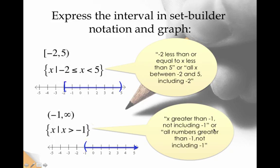We want to express the interval in set-builder notation and graph. So what do I have here? We have a bracket on the negative 2 and a parenthesis on the 5. So what does that mean in set-builder notation? The set of all x such that negative 2 less than or equal to x less than 5.